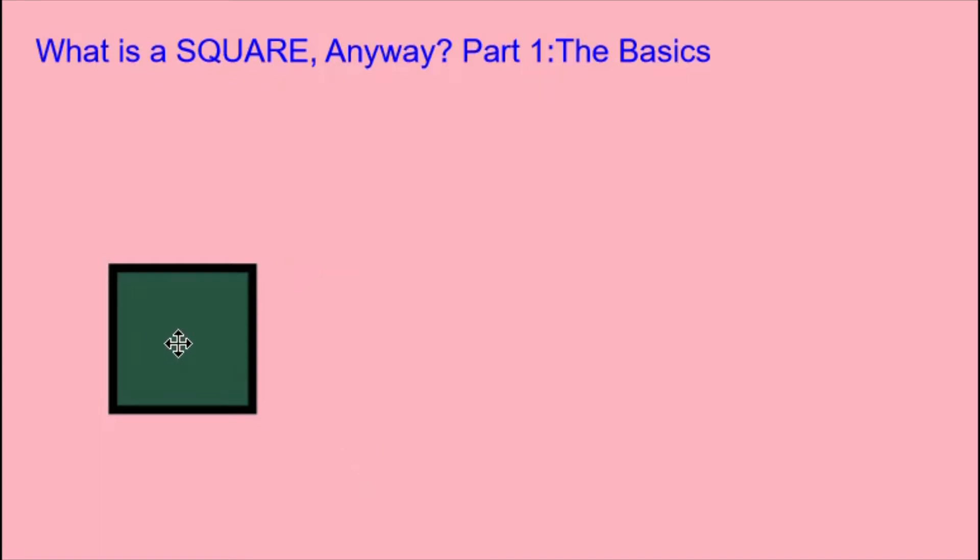A square is a four-sided figure, a quadrilateral. It is a two-dimensional figure. It does not have volume. Let's look at the definition of a square.